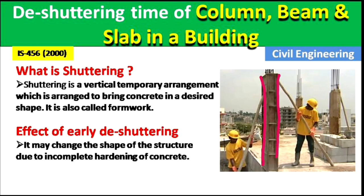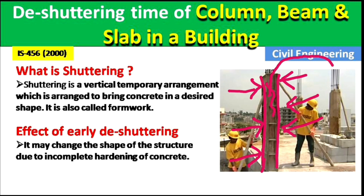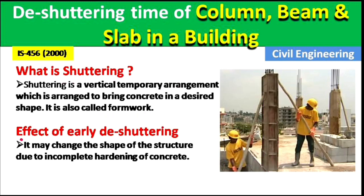If we are constructing a column, what we do is make a covering of wood or steel in the shape of the column, and then we pour concrete into it. This outermost temporary arrangement is known as shuttering, also called formwork.